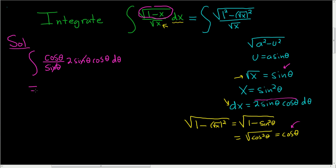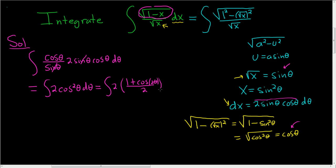So we end up with the integral of 2 cosine squared theta d theta. We'll use a popular identity: cosine squared theta equals (1 plus cosine 2 theta) over 2. This is one of the most useful identities in trig substitution problems — you definitely want to know the identity for cosine squared and for sine squared. The 2s cancel.